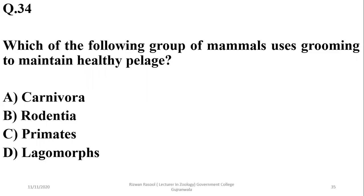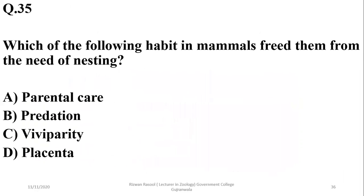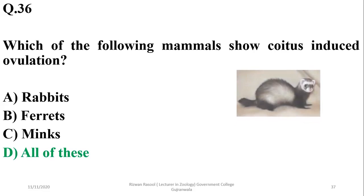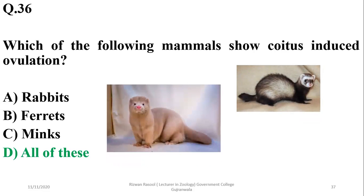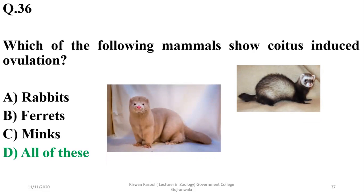Question 33: Which group of mammals uses grooming to maintain healthy pelts? It is the primates that have developed grooming to maintain a healthy pelt. The right option is C. Question 34: Which habit in mammals freed them from the need for nesting? That was viviparity — females do not need to incubate. Question 35: Which mammals show coitus-induced ovulation? This is observed in rabbits, ferrets, and minks — they ovulate eggs only after mating or physical stimulus from the male.